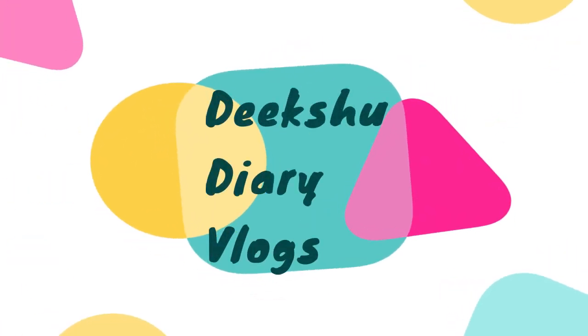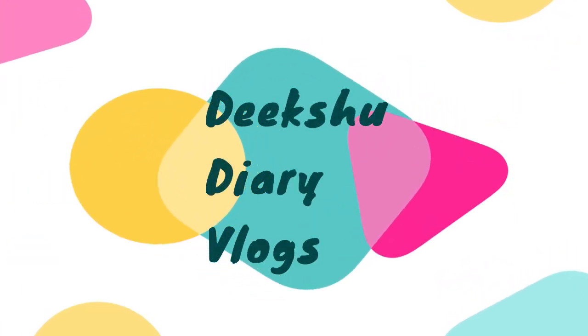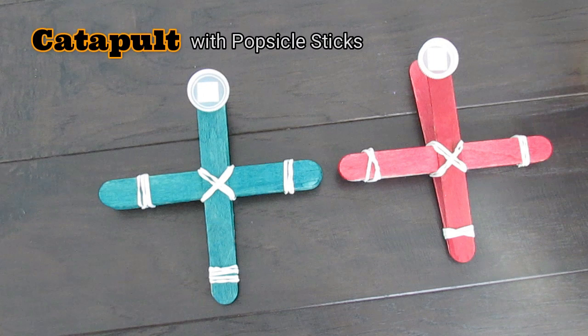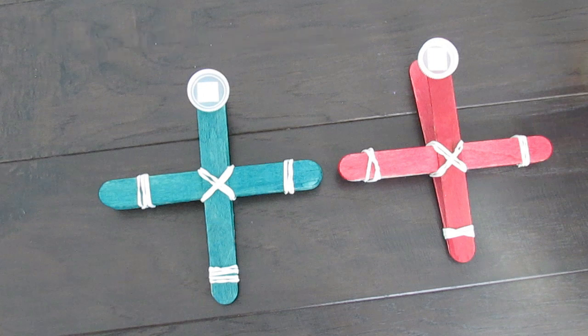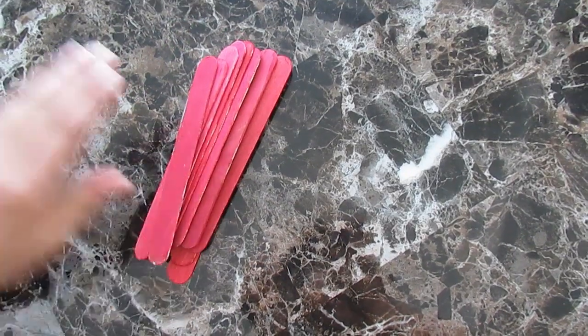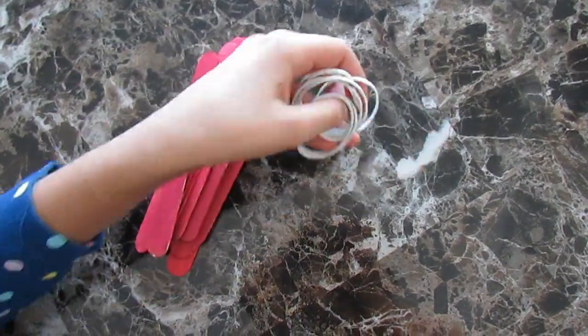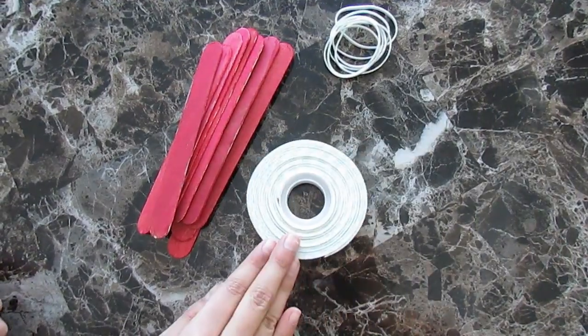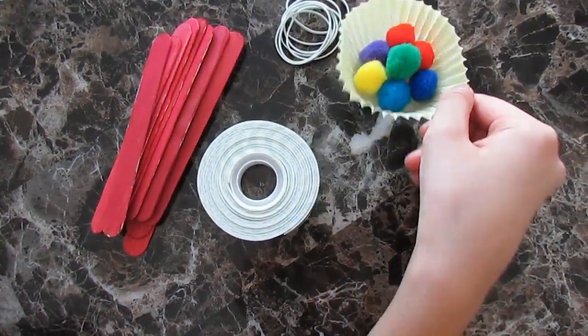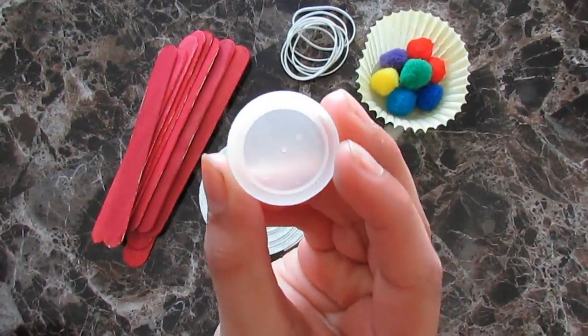Hello guys, welcome to my channel. Today we will make a fun activity with popsicle sticks and pom-poms. What you need is 10 popsicle sticks, rubber bands, double-sided tape, pom-poms, and a bottle cap.